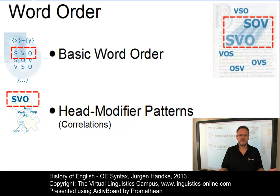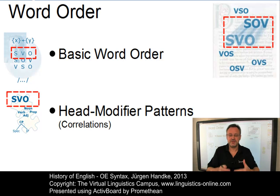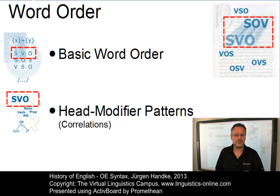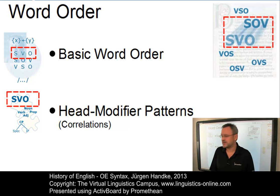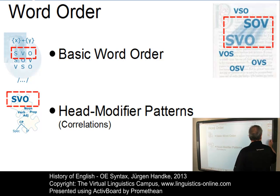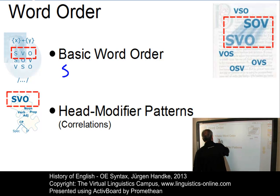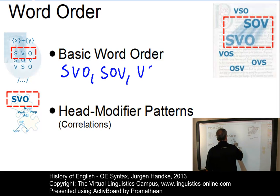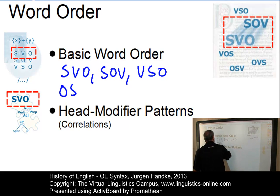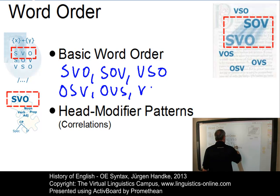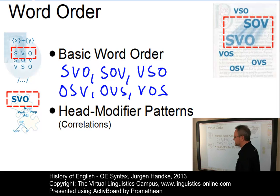Within clauses, if we take the three basic elements of clause structure — subject, verb, and object — there are six theoretically possible orders in which these elements can occur. We can have SVO, SOV, and VSO structures, but we can also have OSV, OVS, and VOS structures. So these are the six theoretically possible options.